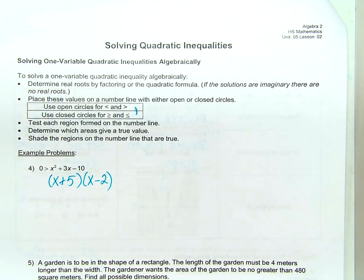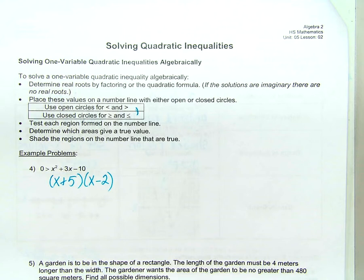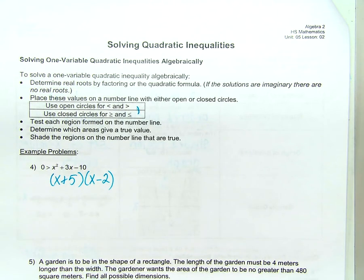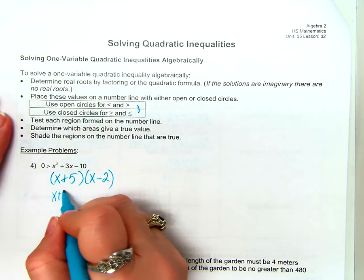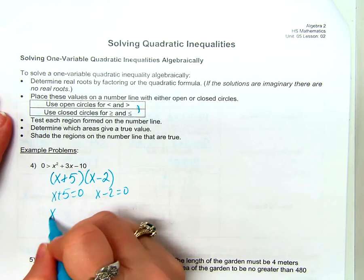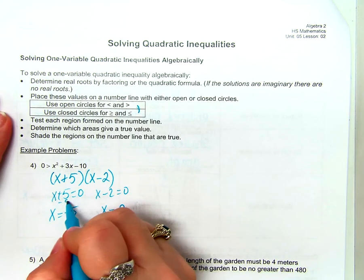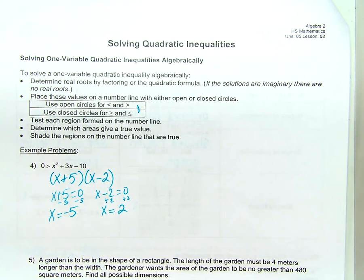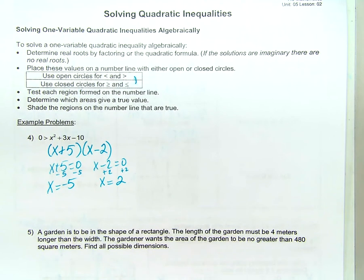If you need to do the quadratic formula, please do — I'm not saying this is the only way. This one's probably easier to factor because those numbers are so simple to see. Now that I know the factors, I can find the roots. How do I go from factors to roots? Set them equal to zero. So x + 5 = 0 and x − 2 = 0, giving x = −5 and x = 2. When we solved quadratic equations, we were done at this point. But it's not enough to just find the roots when solving quadratic inequalities.